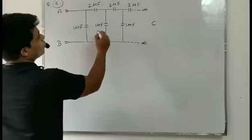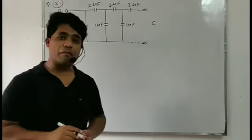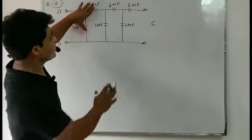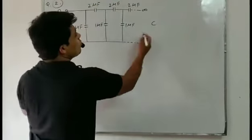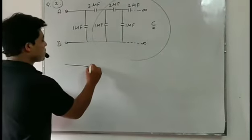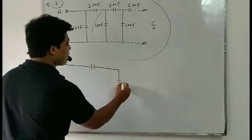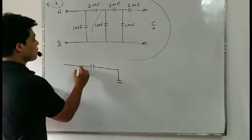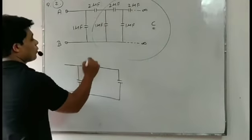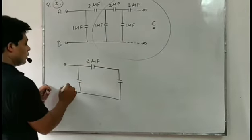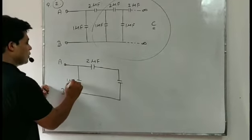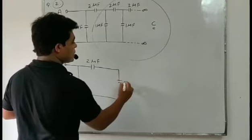So in that type of question, we leave the repeating circuit — keep one set: 1 microfarad and 2 microfarad — and assume the rest as C, the total capacitance of the rest circuit. So we make the circuit: this is 2 microfarad and this is 1 microfarad, and the rest is assumed as C.